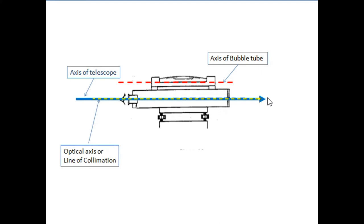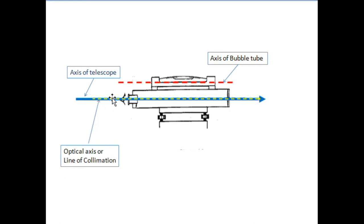The third line is the axis of the bubble tube, which is rigidly fixed on the barrel of the telescope. If both the axis of the bubble tube and the axis of the telescope are parallel to each other, the arrangement becomes perfect — meaning whenever you level the bubble tube, the axis of the telescope will also be leveled. However, if the line of collimation does not coincide with the axis of the telescope, you will get wrong readings. Any error of non-coincidence of the line of collimation with the axis of telescope is called collimation error.